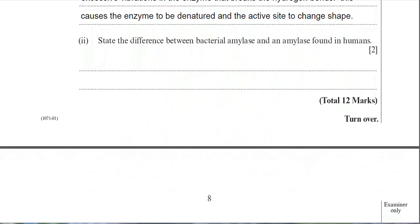Part D: state the difference between bacterial amylase and an amylase found in humans. This is worth two marks. What you should know is examples of human enzymes and their optimum temperatures. Amylase is found in the mouth and also in the duodenum, and all human enzymes have an optimum temperature of around 37°C.